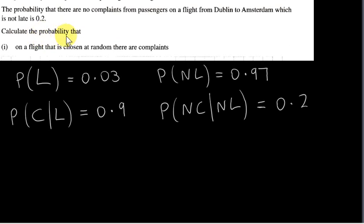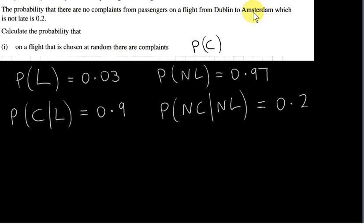We want to calculate the probability that on a flight chosen at random, there are complaints. So we want to find the probability of C. A flight chosen at random from maybe thousands of flights from Dublin to Amsterdam could either be late or not late. Regardless of whether it is late or not late, we want the probability of complaints on that flight, meaning each flight has the same chance of being chosen.